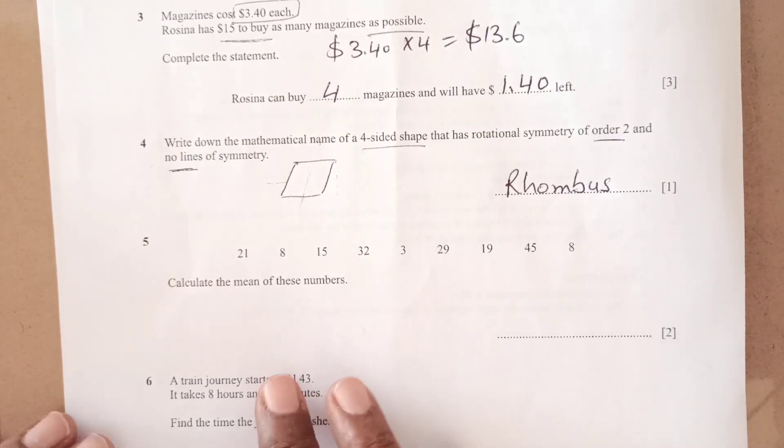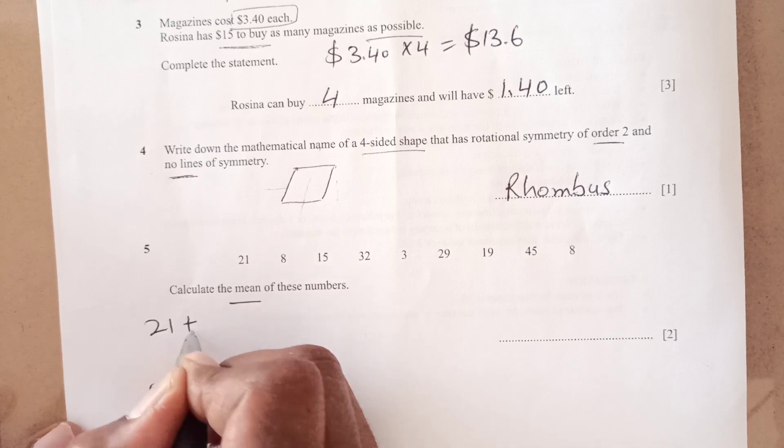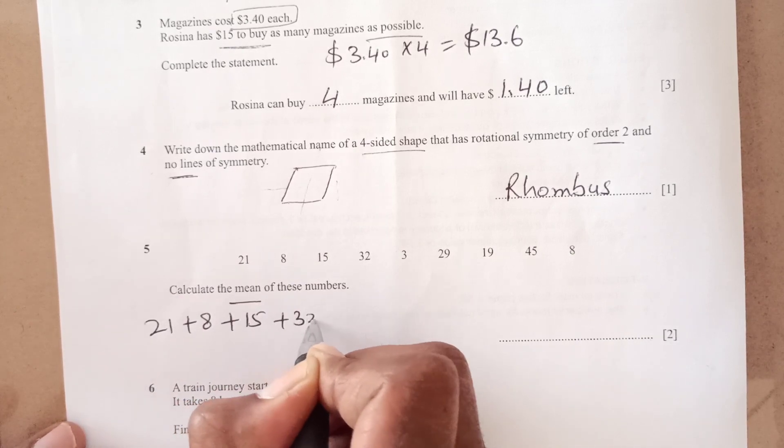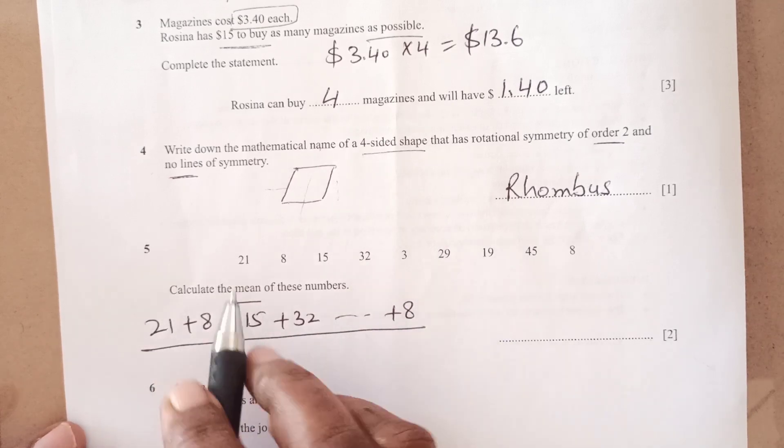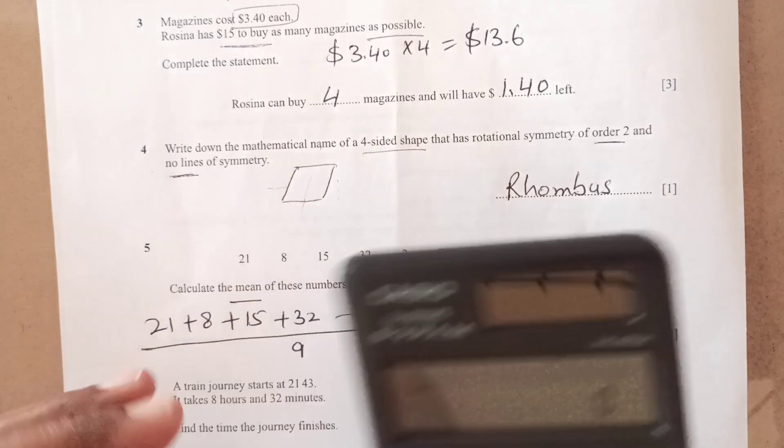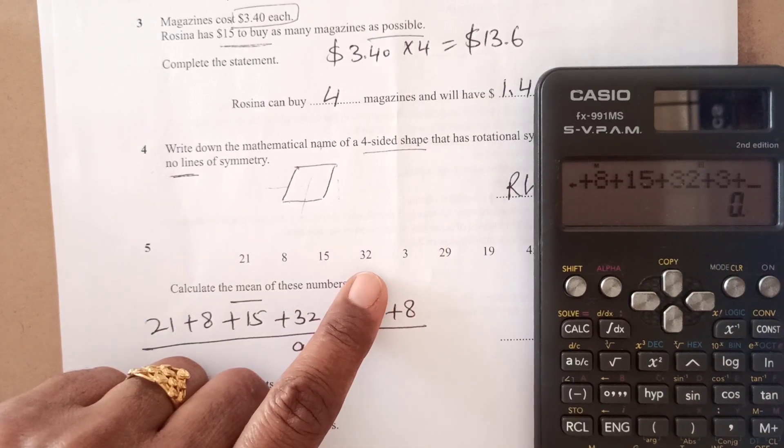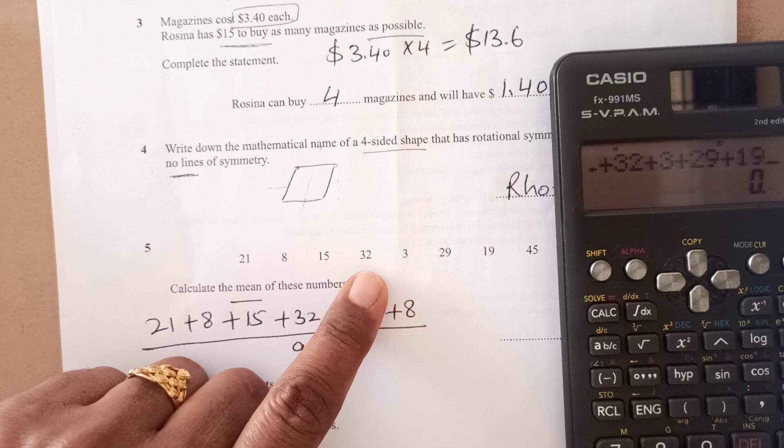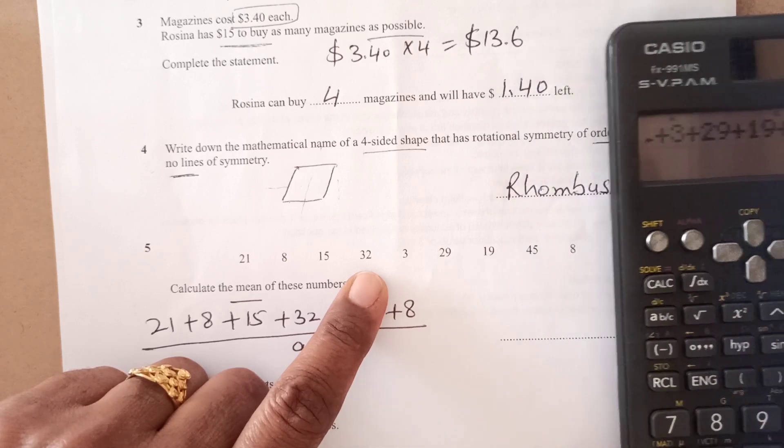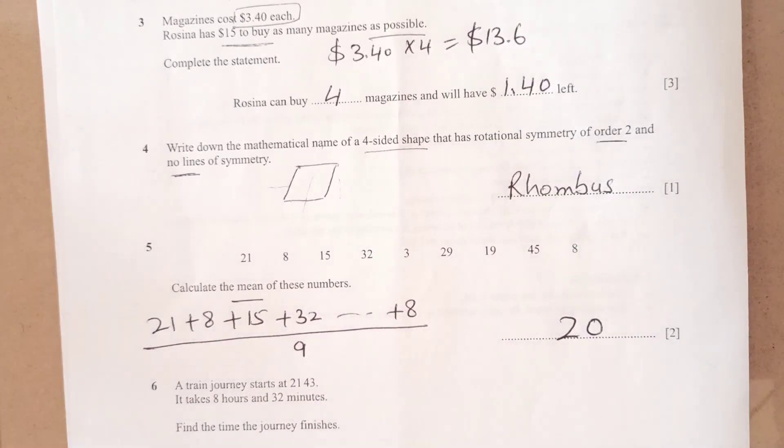Now number 5, calculate the mean of these numbers. First of all, for mean, you are going to add all of them like 21 plus 8 plus 15 plus 32 plus 3 plus 29 plus 19 plus 45 plus 8 over 1, 2, 3, 4, 5, 6, 7, 8, 9 divided by 9. We need to know that it is 21 plus 8 plus 15 plus 32 plus 3 plus 29 plus 19 plus 45 plus 8, divided by 9. This is 20, so final answer is 20.